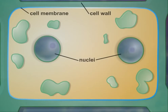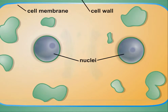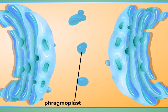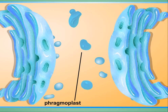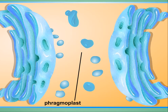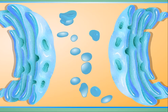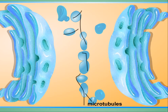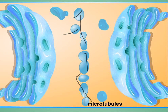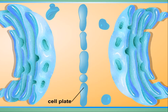In plant cells, membrane components are assembled in the center of the cell to form the phragmoplast. These components are vesicles derived from the Golgi apparatus. The vesicles travel along microtubules, and their content forms the cell plate.